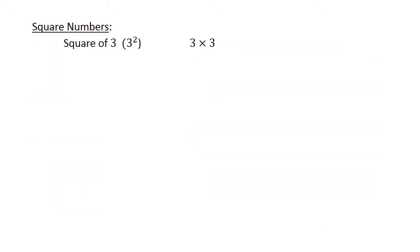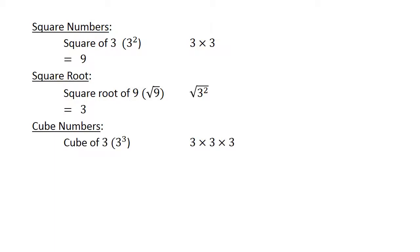Square numbers: The square of 3 equals 9. Square root of 9 equals 3. Cube numbers: The cube of 3 equals 27. And the cube root of 27 equals 3.